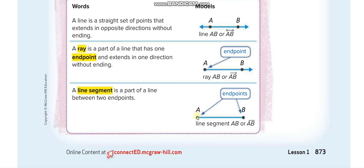The name uses the first endpoint A and the second endpoint B. You can represent the line segment in two ways: the first is Line Segment AB, and the second is AB with a small line segment above it.